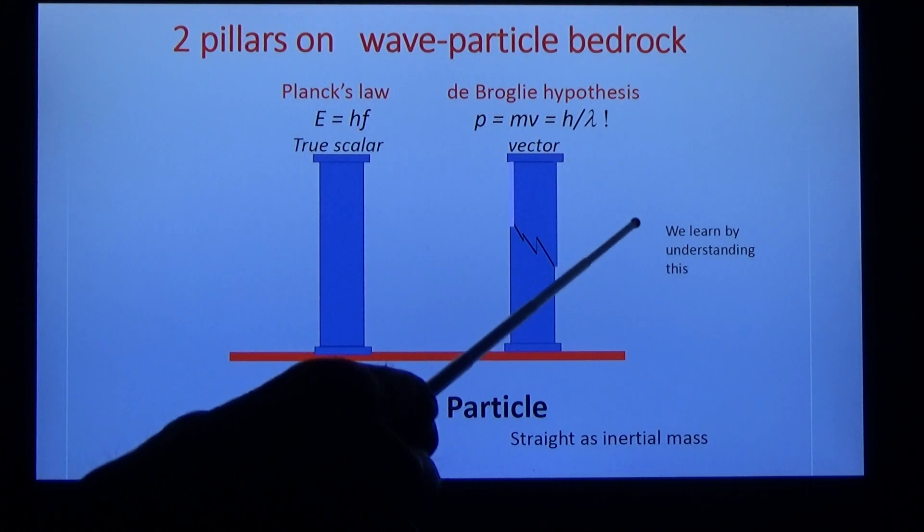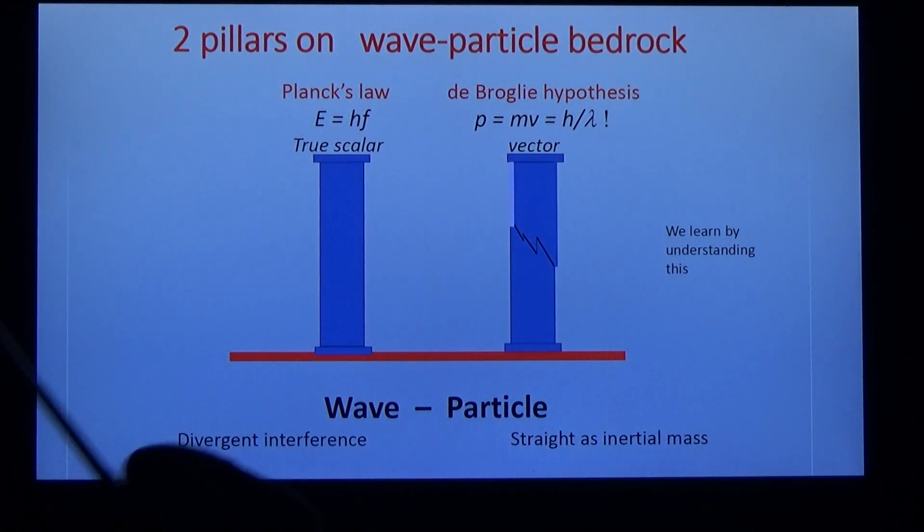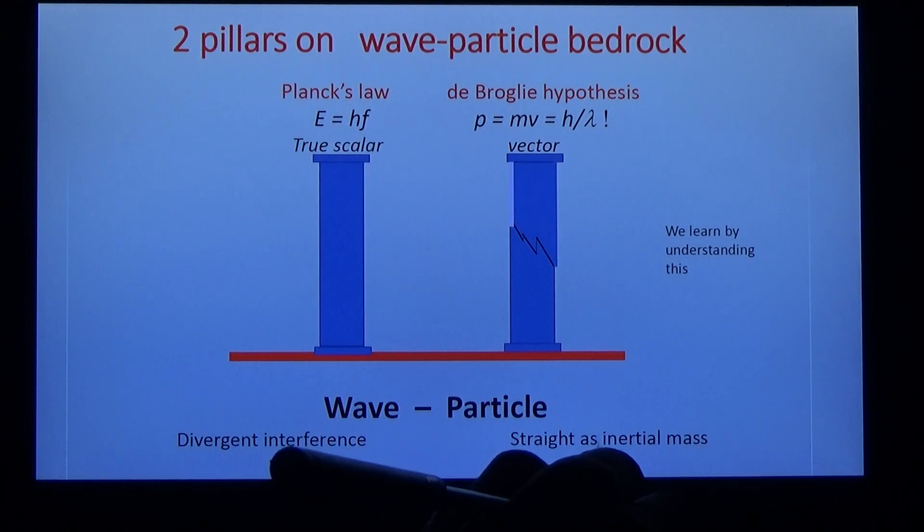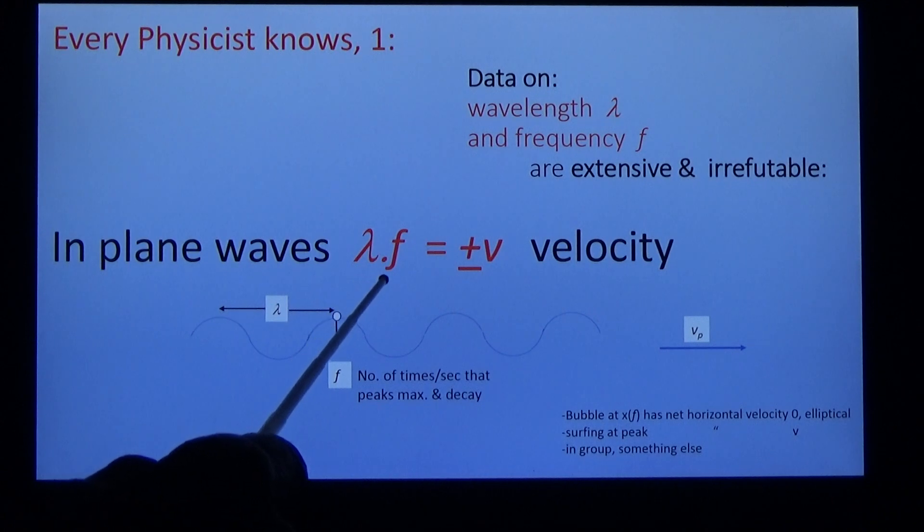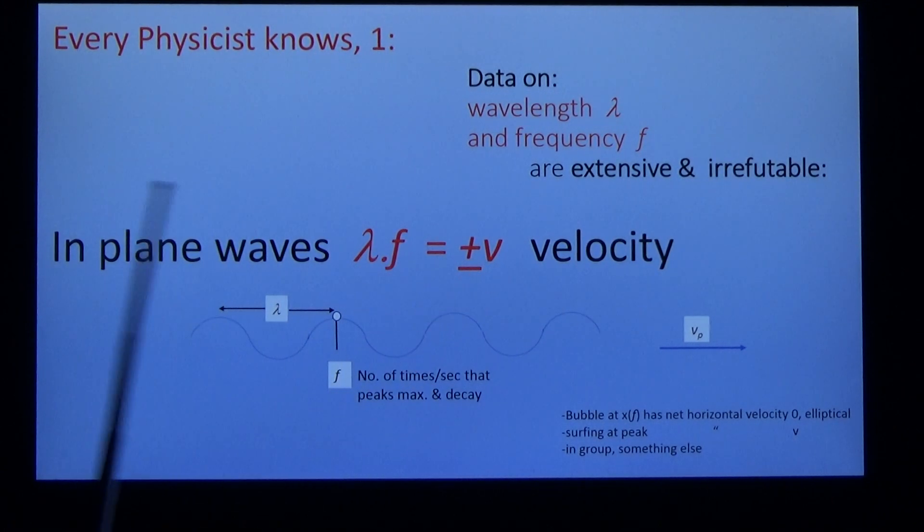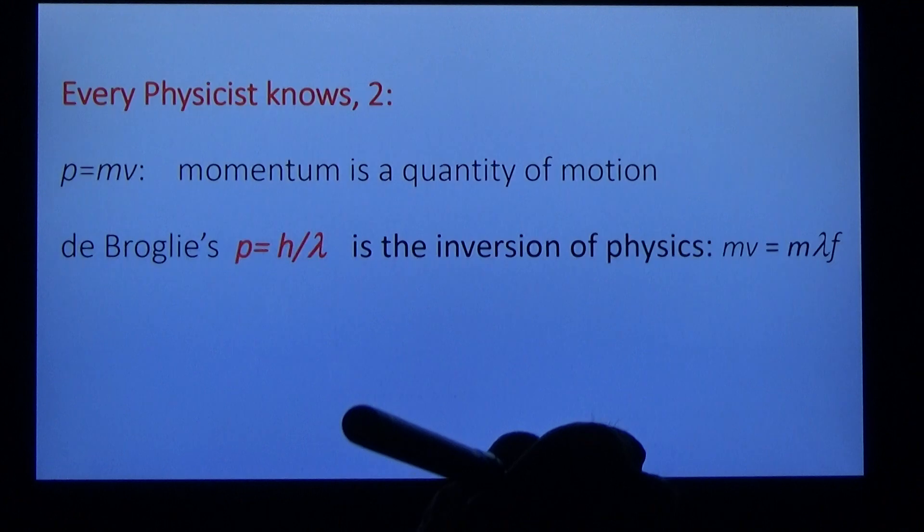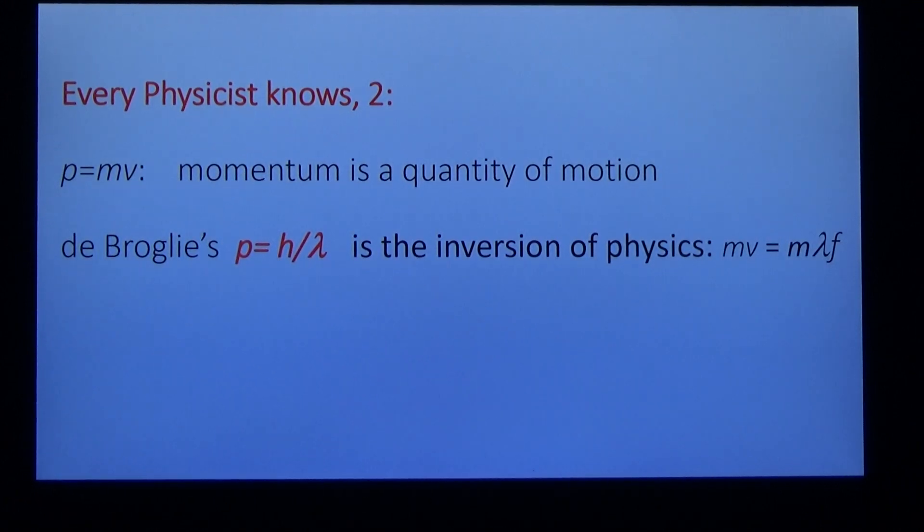That's where we will start to talk. We learn by understanding this fact: every physicist knows that in plane waves, the product of the wavelength with the frequency tells you the velocity of the wave. Lambda times f equals v. But de Broglie found otherwise: his momentum is equal to mv.